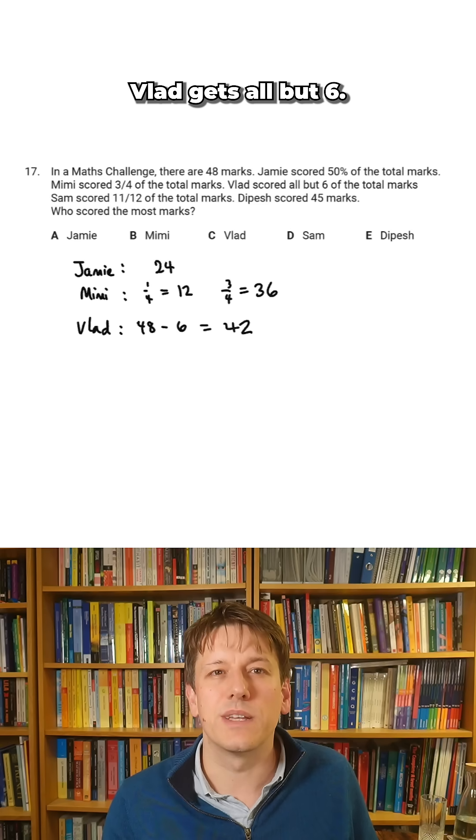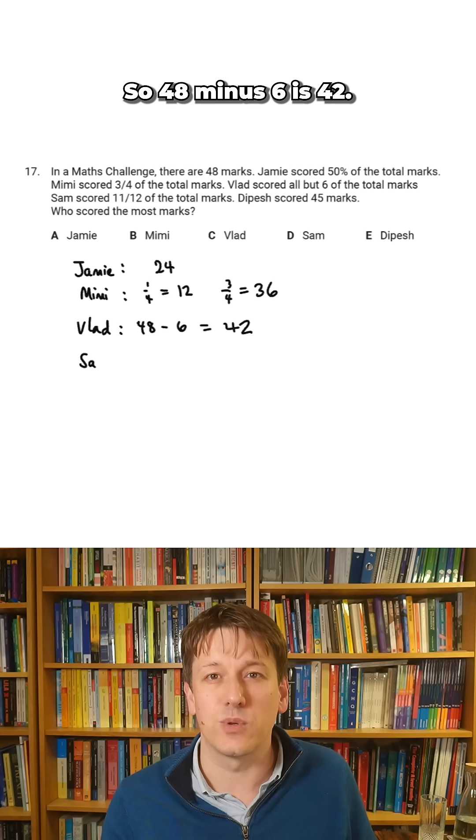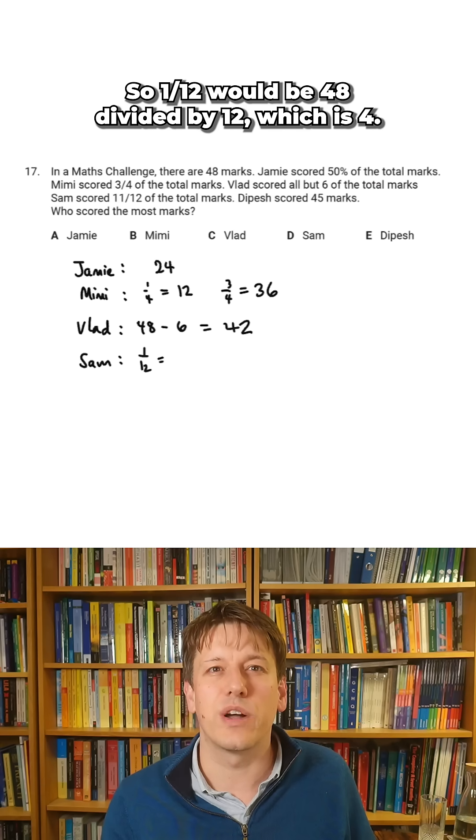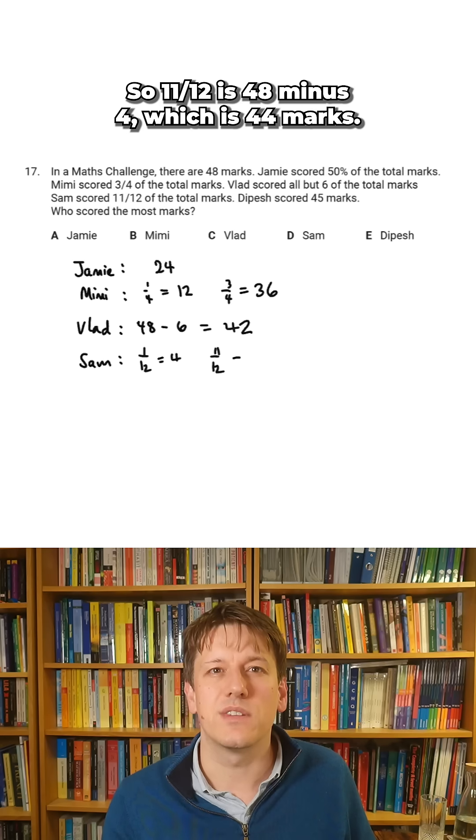Vlad gets all but six, so 48 minus six is 42. Sam gets 11 twelfths, so one twelfth would be 48 divided by 12, which is four. So 11 twelfths is 48 minus four, which is 44 marks.